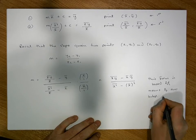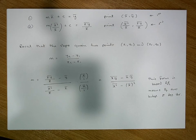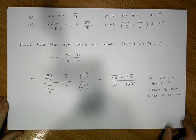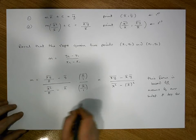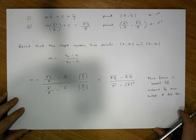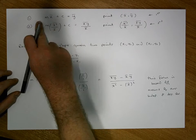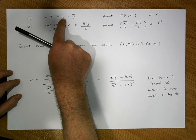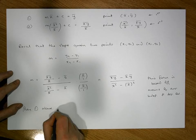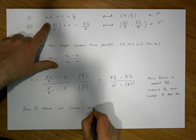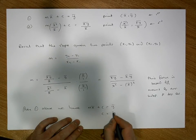So our slope m = (xȳ − x̄ȳ) / (x²̄ − x̄²), which is expressed entirely in terms of means of our independent and dependent variables. Once we have the slope, we can calculate the y-intercept. Going back to Line 1: mx̄ + c = ȳ, solving for c gives us c = ȳ − mx̄.